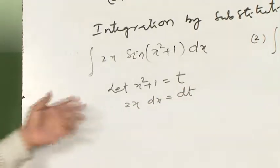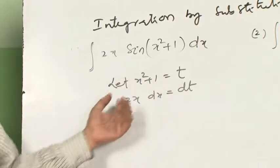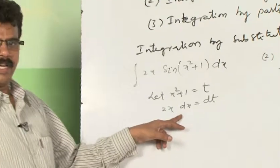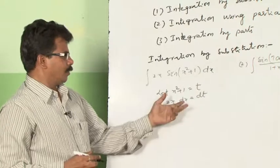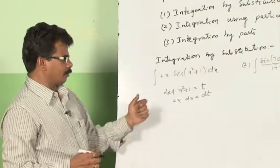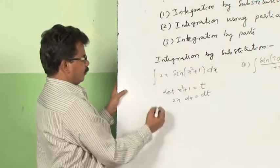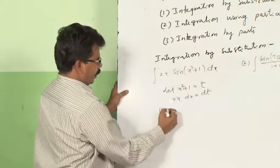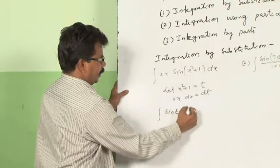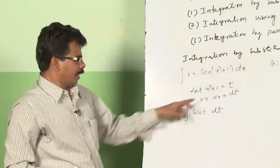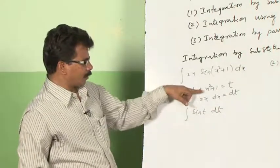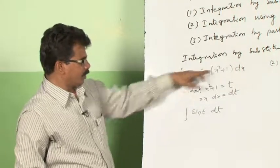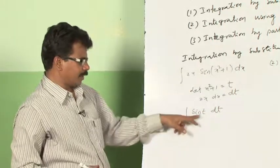We may get some doubt: why I have written dx and what about dt and so on? I have differentiated this with respect to t, and the derivative of x² is 2x · dx/dt, that is dt I have written here. So this will be suitable for substitution also. Now substitute all this in the given function: this 2x dx can be written as dt, and sin(x² + 1) can be written as sin(t) · dt.